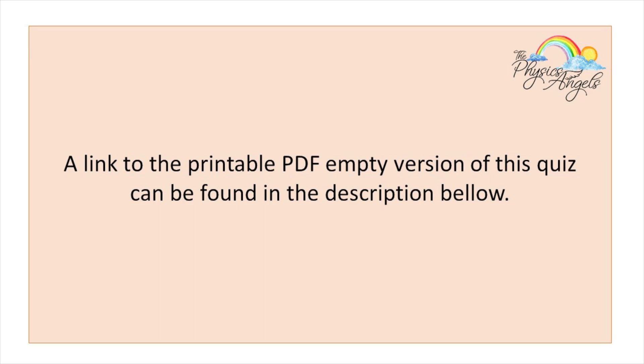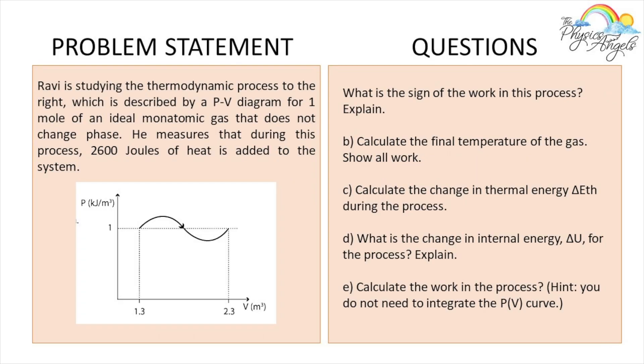This is the problem that we're going to be doing today. Ravi is studying the thermodynamic process to the right, which is described by a PV diagram for one mole of an ideal monatomic gas that does not change phase. He measures that during this process, 2,600 joules of heat is added to the system. What is the sign of the work in this process? Calculate the final temperature, calculate change in internal energy, calculate change in thermal energy, and then calculate the work in the process.